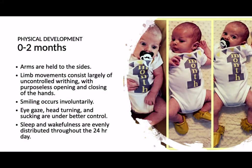In terms of physical development, an infant less than two months old holds arms to the sides with limb movements consisting largely of uncontrolled waving and purposeless opening and closing of the hands. Smiling occurs involuntarily — not as a social response. Eye gaze, head turning, and sucking are under better control than in newborns, and sleep and wakefulness are evenly distributed throughout the 24-hour period.